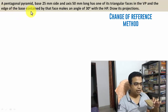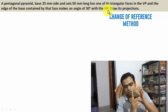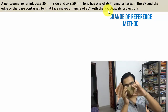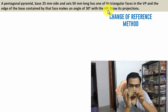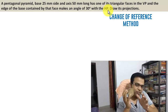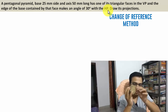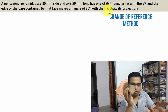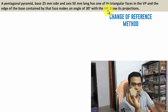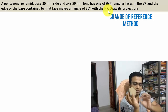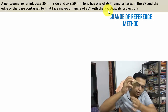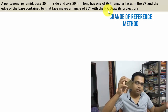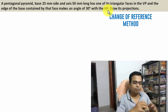The edge of the base contained by that triangular face makes an angle of 30 degrees with the HP. So this triangular face, which is in contact with the vertical plane, has a base edge, and this base edge is going to make an angle with the horizontal plane — 30 degrees. If you extend this edge, it's going to make that same angle of 30 degrees with the horizontal plane.